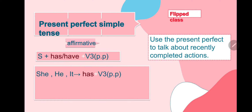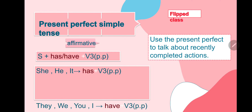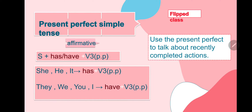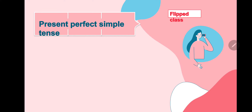Look at the affirmative: Subject + has or have + past participle. Has is used with he, she, it. Have is used with I, you, we, they. After has/have, always use verb 3.